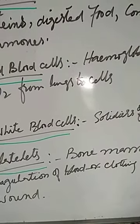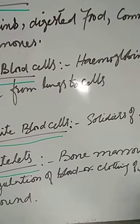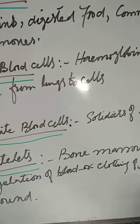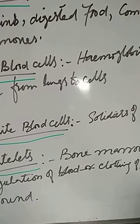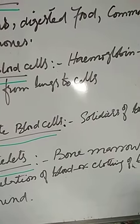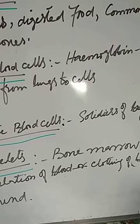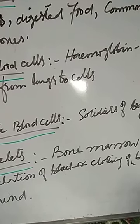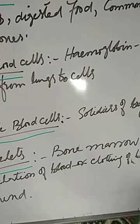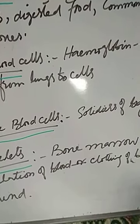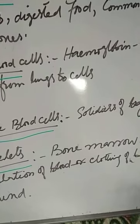Number six, blood protects the body from diseases because white blood cells kill the pathogens. Number seven, blood regulates the body temperature. The blood capillaries in our bodies help to keep our body temperature constant at about 37 degrees Celsius.